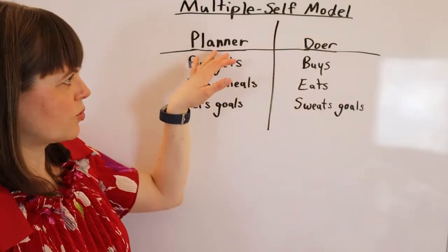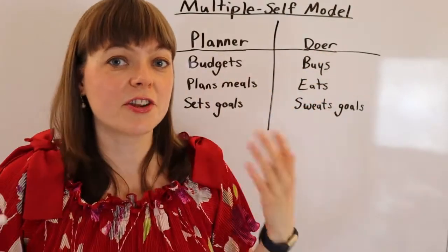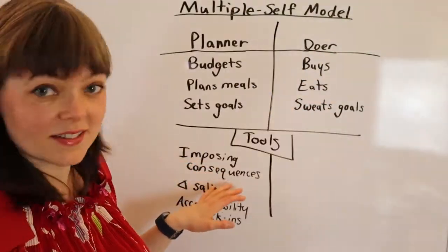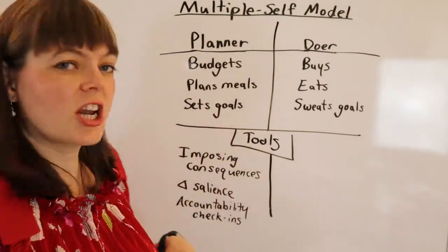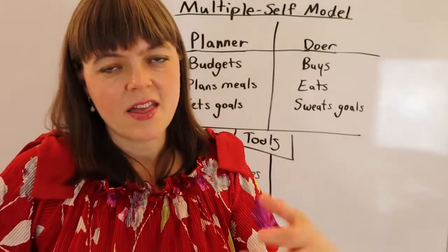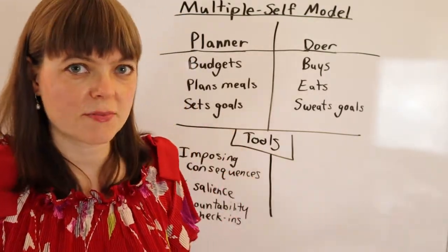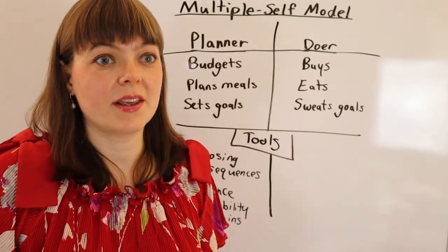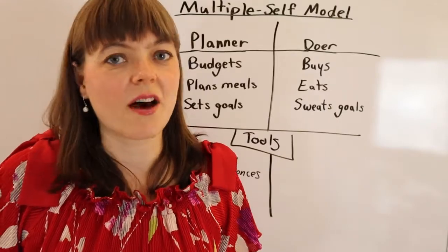So what kinds of tools does the planner self have to inspire the doer? Things like imposing consequences on yourself. Changing the salience — if you pay more attention to something, that's going to cause it to have a heavier weight in your decision-making. And accountability check-ins, which could be check-ins with yourself or with other people.